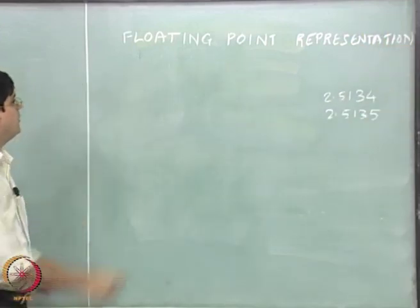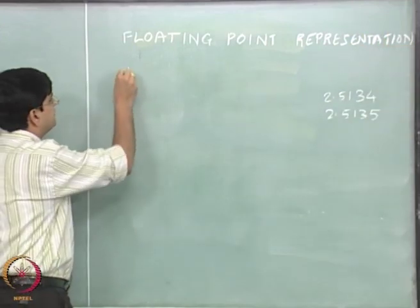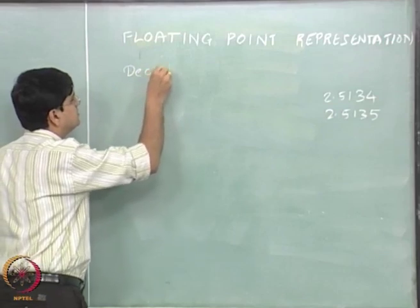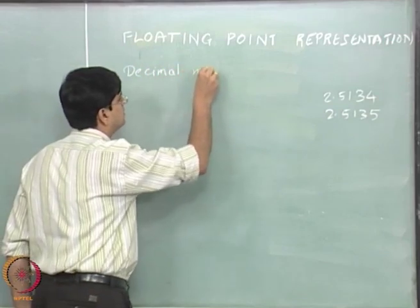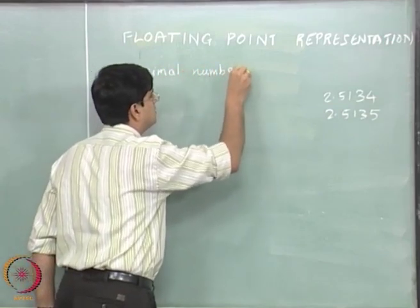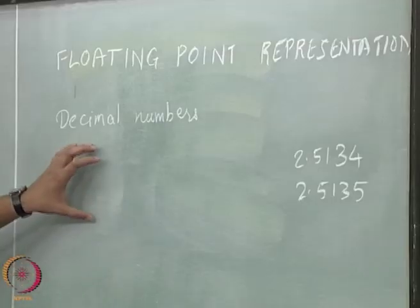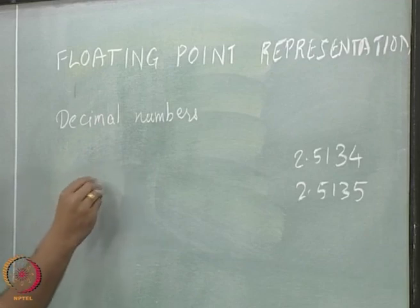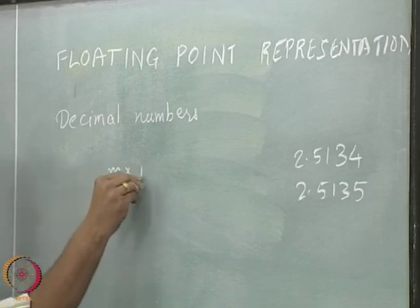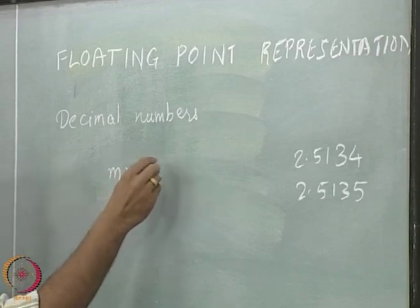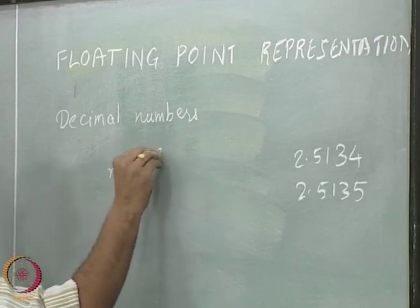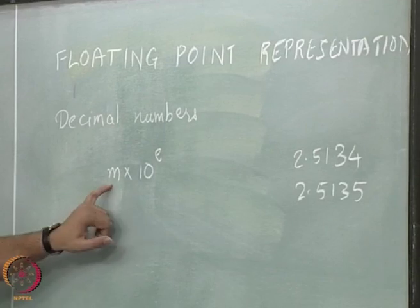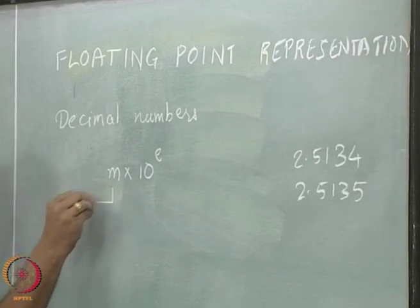I will talk about floating point representation for decimal numbers. The floating point representation will always be written as some number M multiplied by 10 to the power E. This particular M carries the name mantissa.